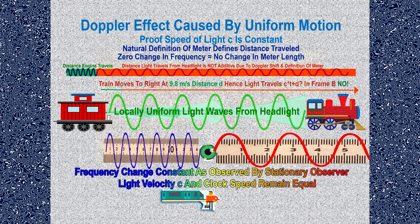The definition of a meter is a number of wavelengths over a certain distance, and the Doppler shift will cause those waves to compress, so the length of a meter will be compressed and the distance d is not additive for the speed of light. The train's motion causes light waves to be compressed or blue-shifted as seen in B's frame. So B must use the meter shortened by Doppler shift to calculate the total distance traveled by light from the train headlight, resulting in the same distance as measured by frame A.